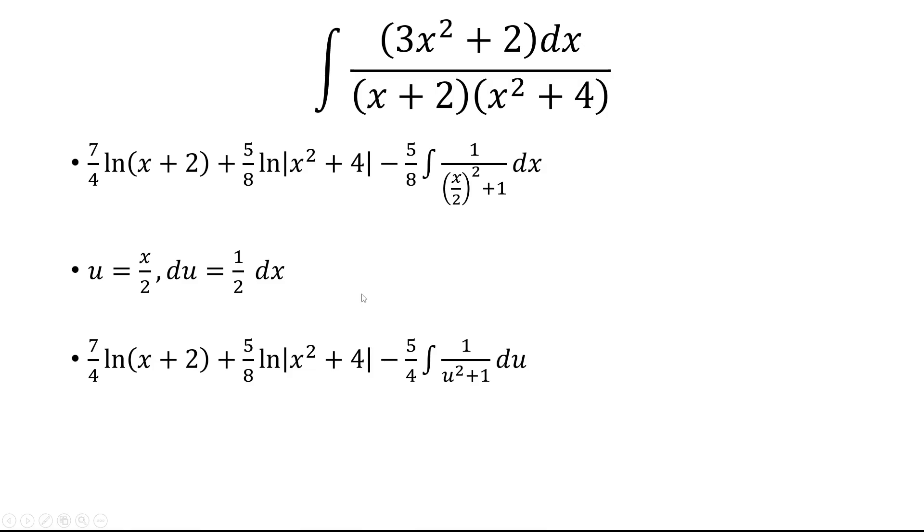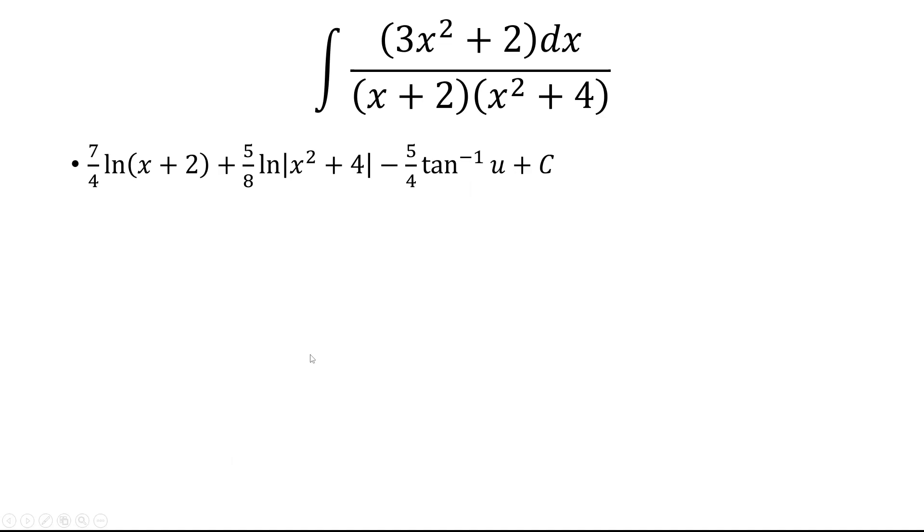And then obviously, dx was 2 du, so the 2 came outside. And that's why it turned from 5 eighths to 5 fourths. The antiderivative 1 over u squared plus 1 is the inverse tangent of u. And now we just need to replace u with x over 2 to get our final answer.